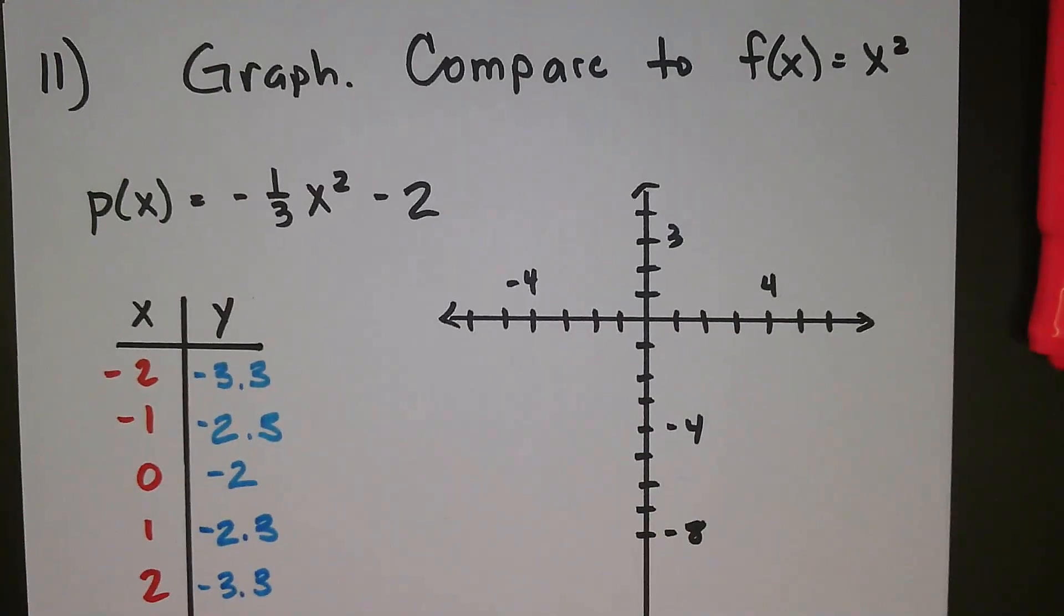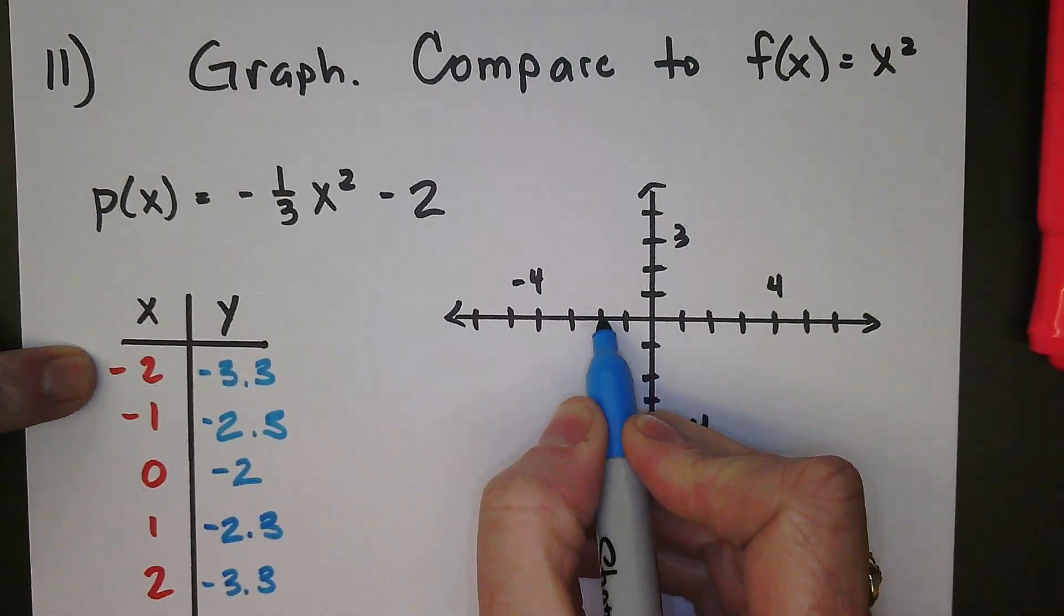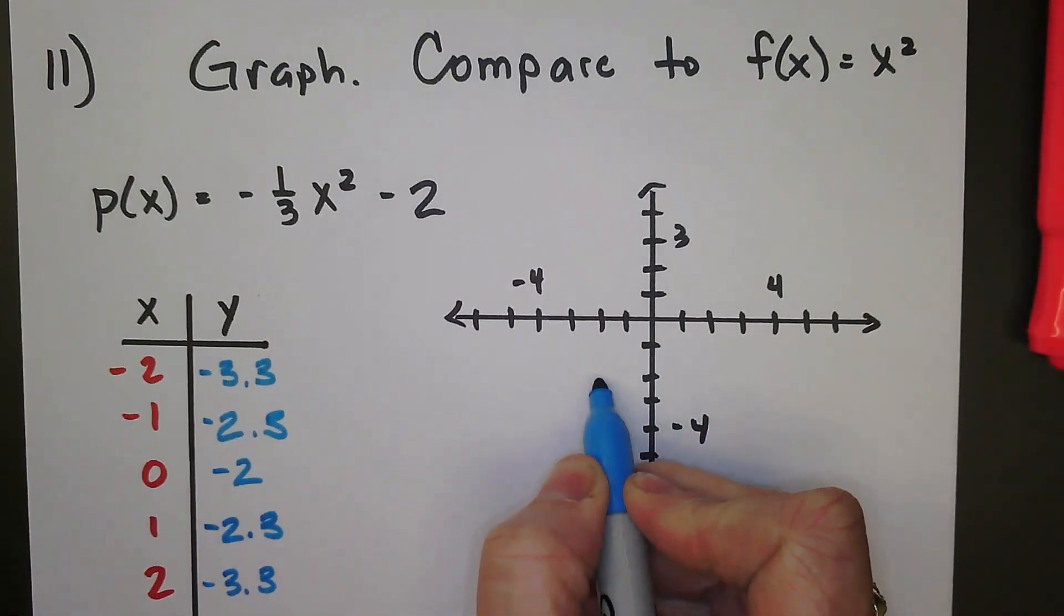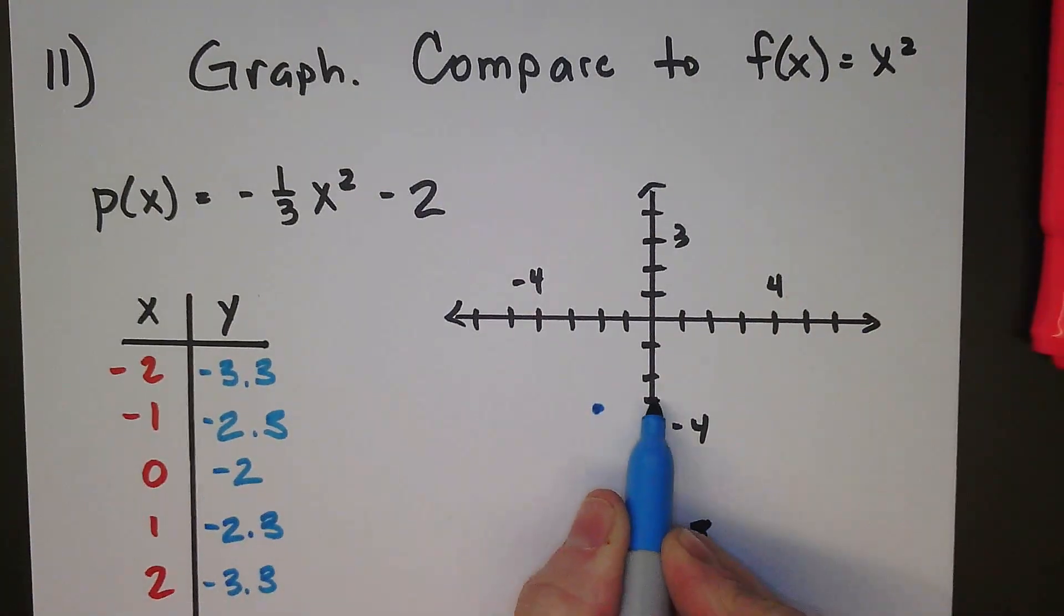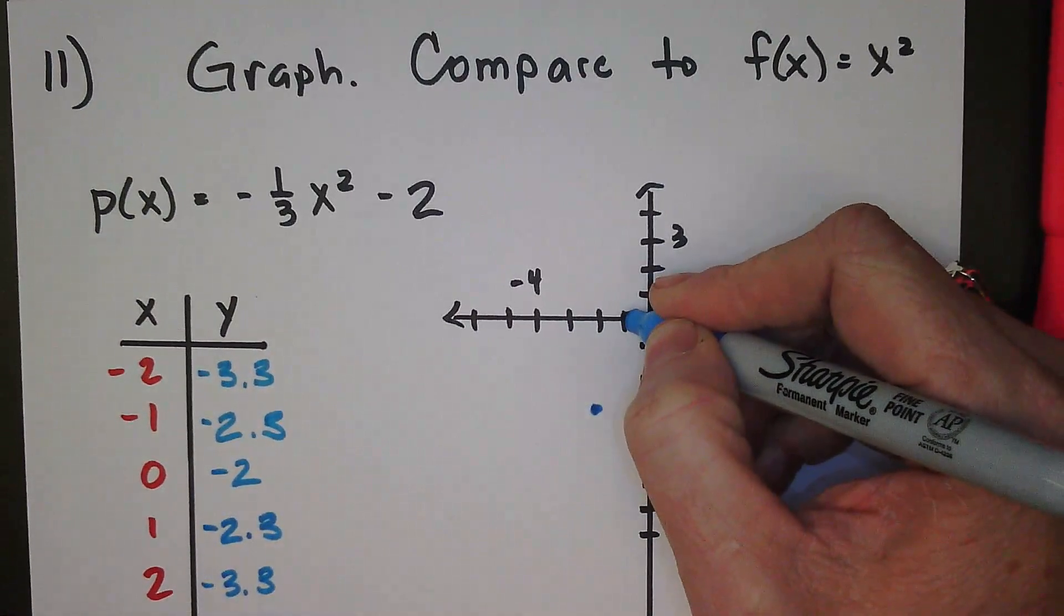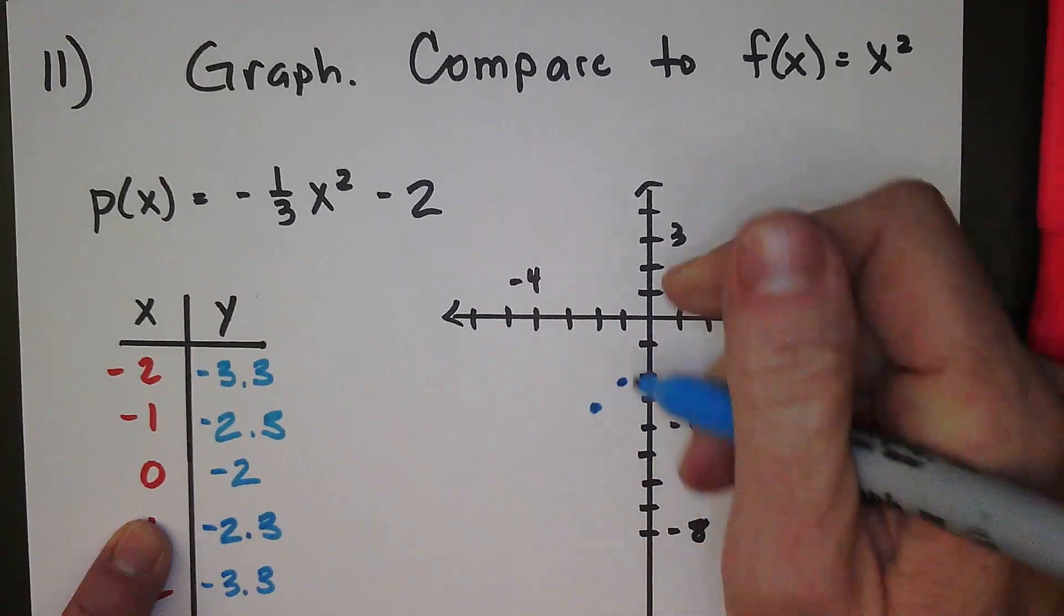Okay, so let's plot those points. At negative 2, so from the origin we're going to go to the left 2. I'm going to go down 3 and then a little bit more, a third. 1, 2, 3, and I don't go all the way to 4, I just go down a third below where 3 was, so it's a little bit lower.